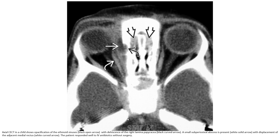This is again axial CT in a child showing opacification of the ethmoid sinus with dehiscence of the right lamina papyracea. A small subperiosteal abscess is present with displacement of the adjacent medial rectus muscle. The patient responded well to IV antibiotics without surgery.